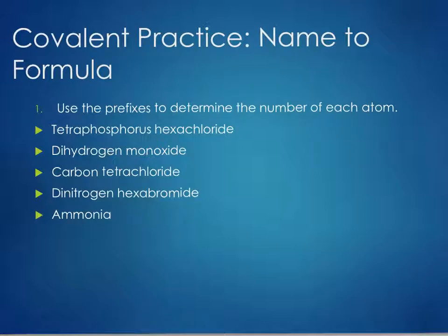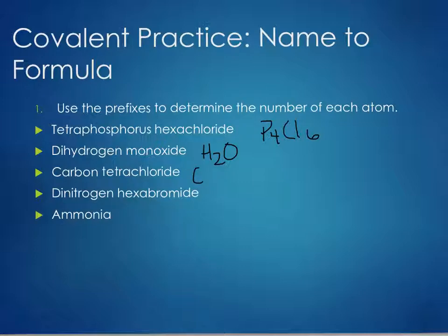Covalent practice — name to formula: prefixes tell you how many atoms you need. Tetraphosphorus hexachloride is P₄Cl₆. Dihydrogen monoxide is H₂O — also water. Carbon tetrachloride is CCl₄ — one carbon because there's no prefix, four chlorines from tetra. Dinitrogen hexabromide is N₂Br₆. Ammonia is one of the common names you need to remember: NH₃.